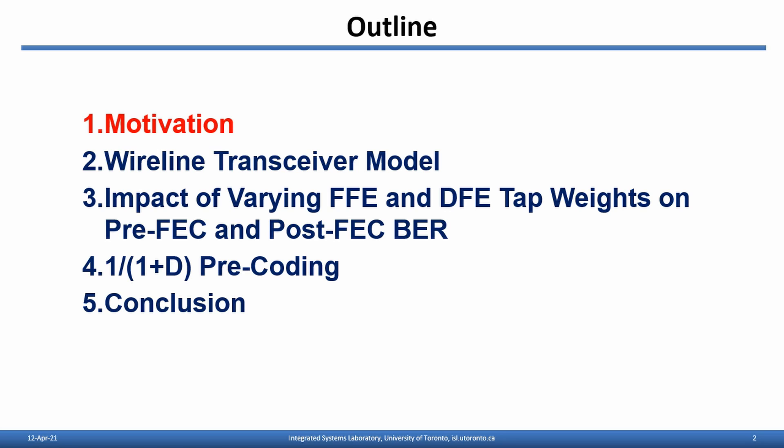In the next section, we will introduce the transceiver model we developed that is able to capture both FFE noise amplification and DFE error propagation. In section 3, we will present simulation results showing the impact of varying FFE and DFE tap weights on pre-FEC and post-FEC bit error rate. We will also include discussion about 1/(1+D) coding in section 4, which is part of the industry standard in long-range 400G systems to eliminate burst errors. Conclusions will be drawn in section 5.